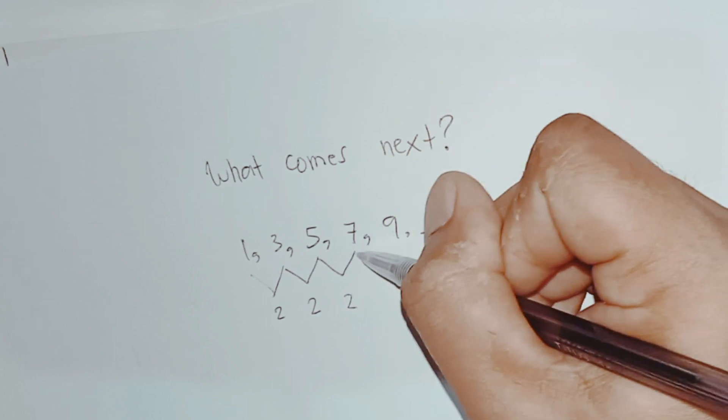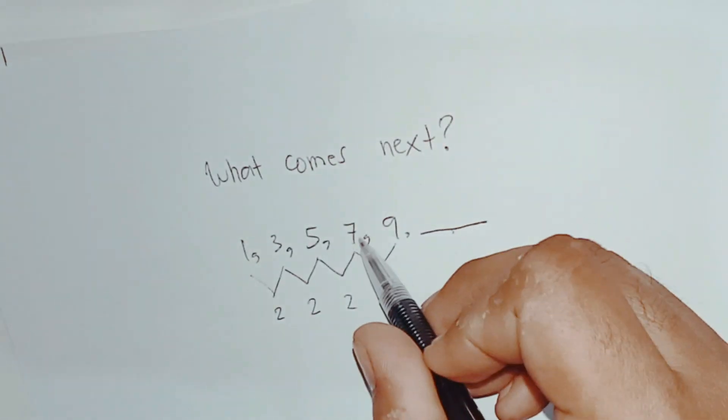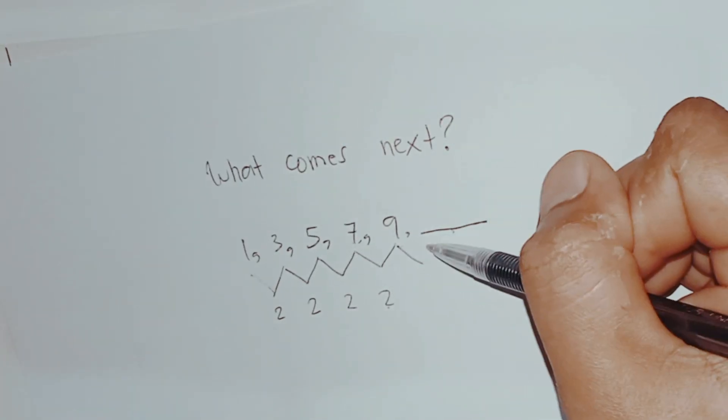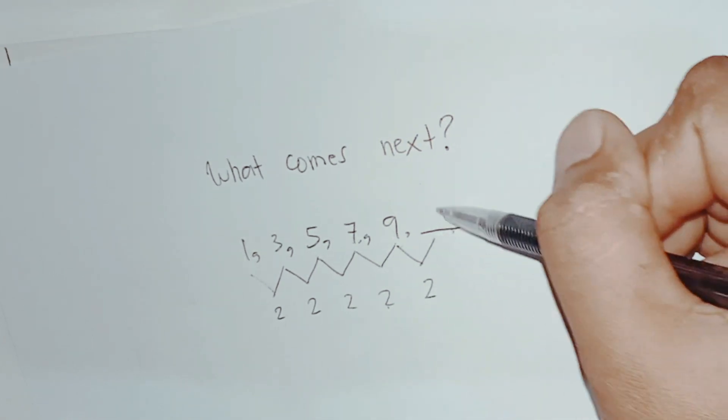We write here the two because seven to nine is two. That means to say the number next to nine is plus two, so that is 11.